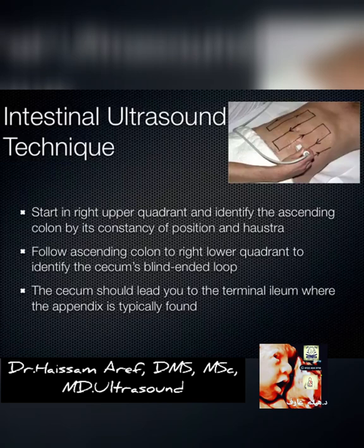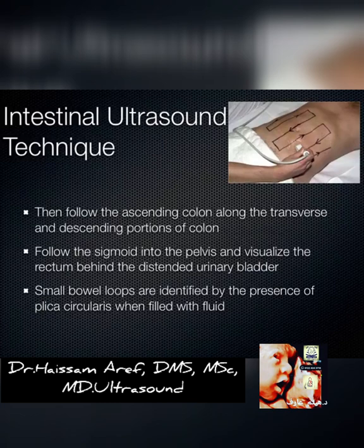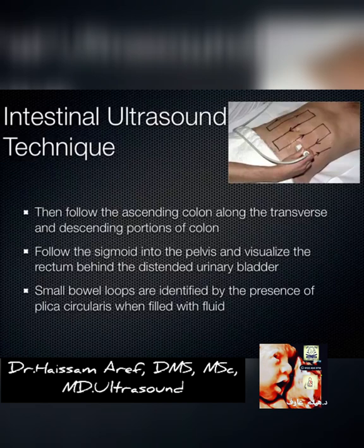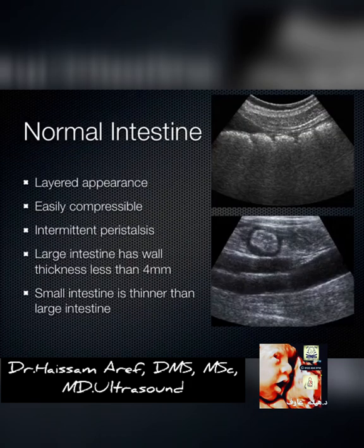You follow the ascending colon down to the right lower quadrant, where you expect to see the cecum with its blind-ended loop, which brings you to the terminal ileum where the appendix juts off. Then you go back up the ascending colon, across the transverse, and down the descending colon. You'll see the sigmoid down in the pelvis, and the rectum is very easy to see almost always — right behind a nice fluid-filled bladder. Differentiating small bowel from large bowel is difficult with air-filled loops, but in disease states you can make out the plicae circulares.